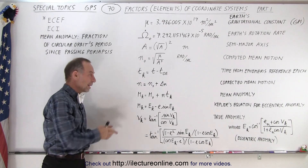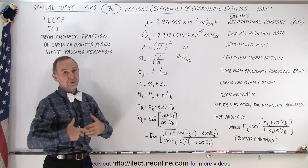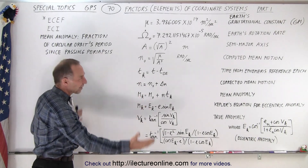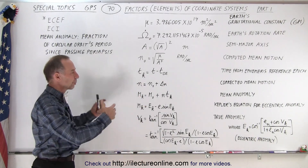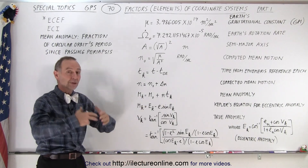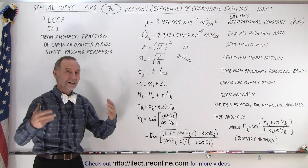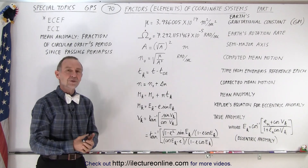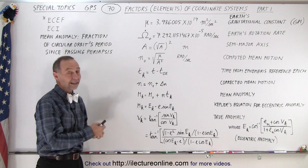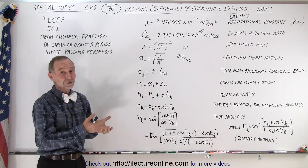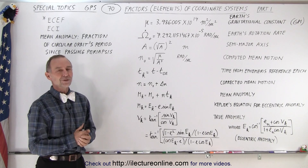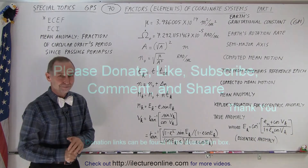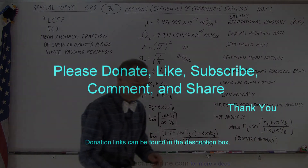Of course, this is going to make a lot more sense once we show you some examples, but that will come later. First, we want to define all the parameters and elements, define the ephemeris data that the satellite sends down to the receivers, and then we'll show you how that's actually used later on in the course. And that is how it's done. Thank you.